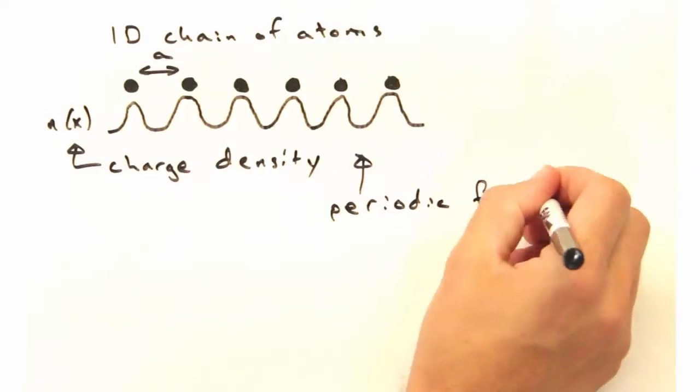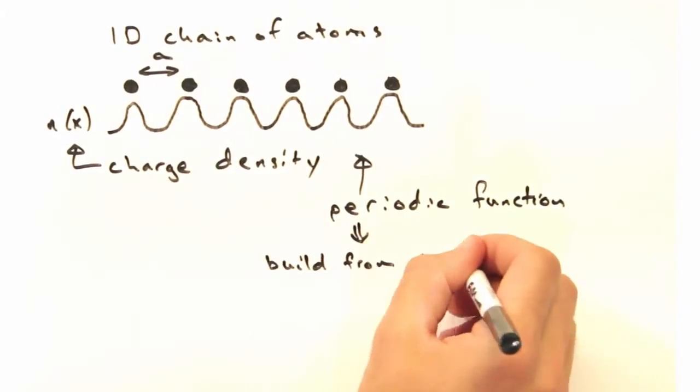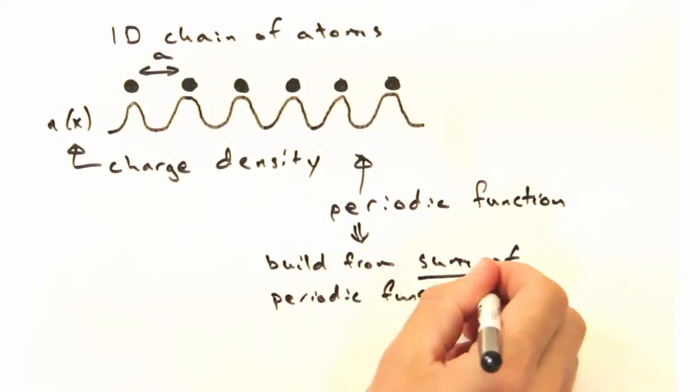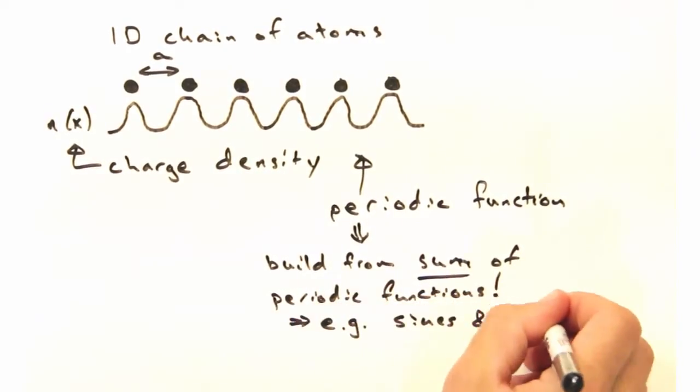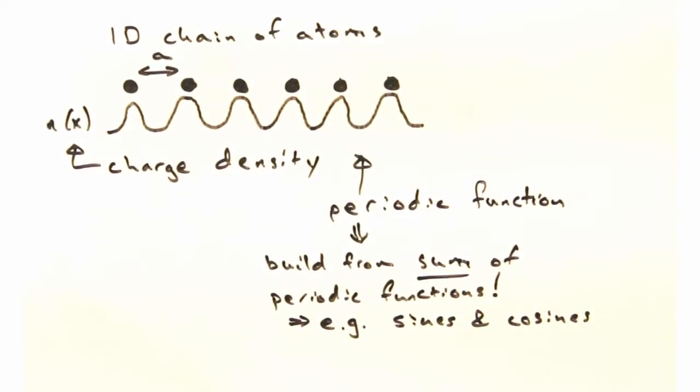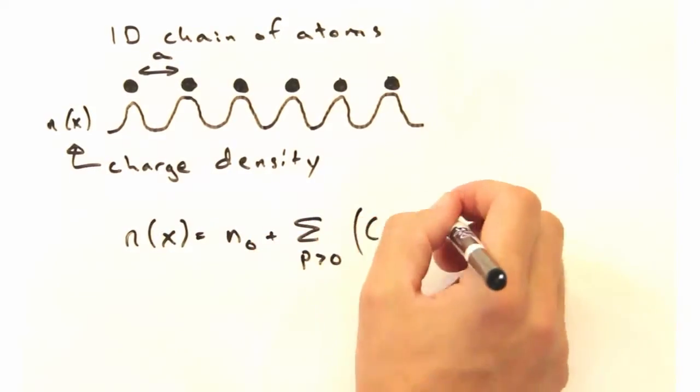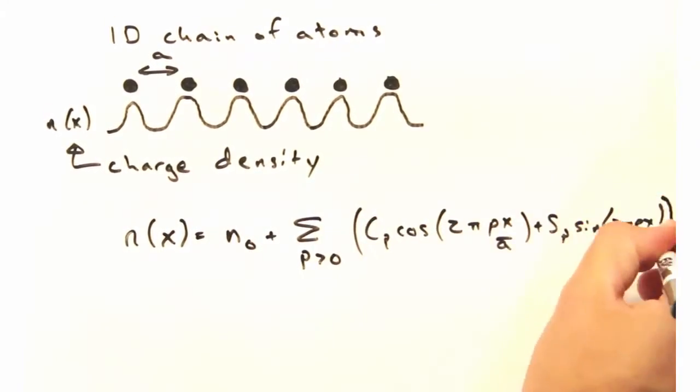This may be a little disconcerting at first, because we may not have an exact equation for N of x. But because we have something periodic, we can build it using a sum of other periodic functions, like sines and cosines. This sum is what we call a Fourier series.